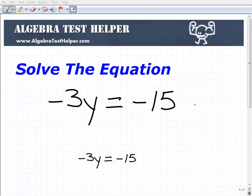Okay, let's go ahead and solve this equation here. This is -3y equals -15.